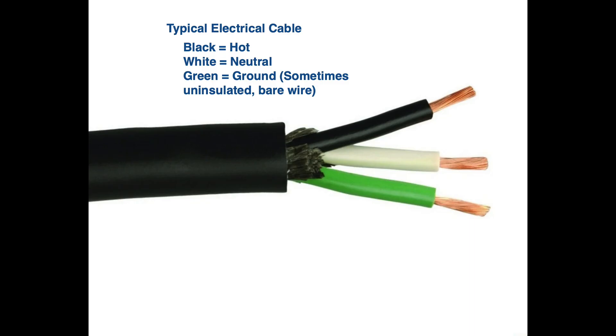You probably know this, but these are the usual wire colors in a three conductor cable. The black conductor is the hot or energized cable, the white conductor is the neutral wire, and the green wire is the ground wire. Sometimes the ground wire is uninsulated.